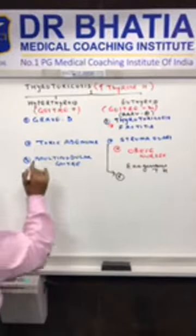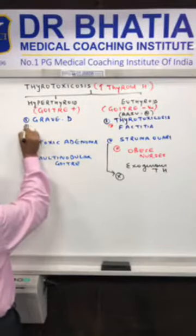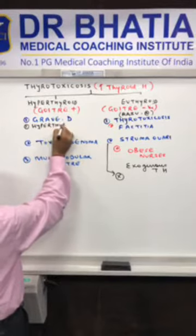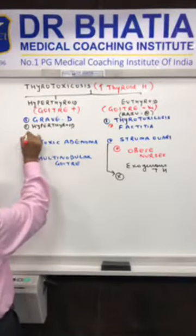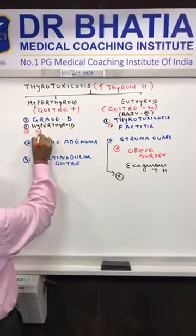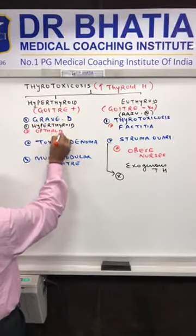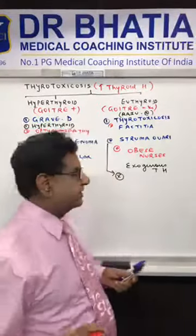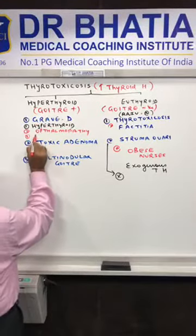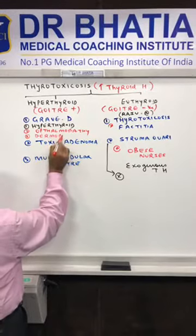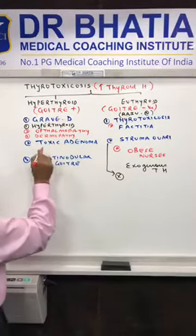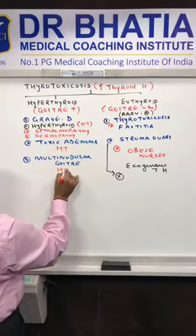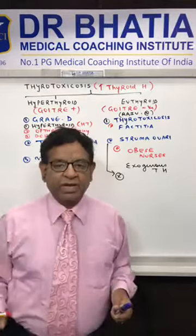Now let's come to where the hormone is coming from the thyroid gland itself. The first entity is Graves' disease. Graves' disease is a triad of: hyperthyroid, ophthalmopathy - meaning eye signs are seen in this patient - and dermopathy. In toxic adenoma and multinodular goiter, there is only hyperthyroid - they do not have skin signs and they do not have eye signs.